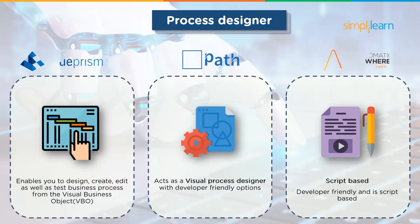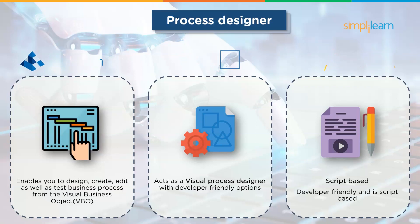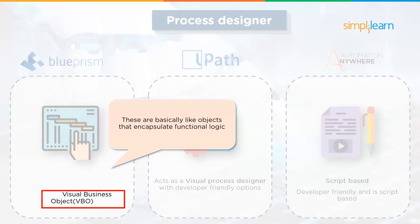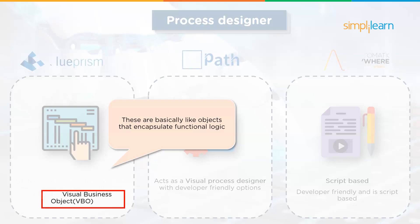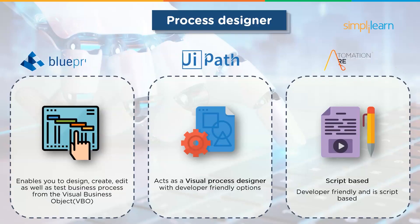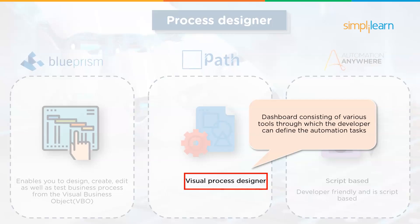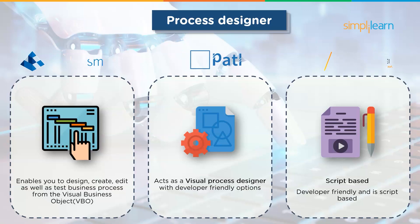Next up we have Process Designer. Blue Prism allows you to design, create, edit as well as test business processes with the help of Visual Business Object. VBO is like an object that you see in C#, C++ or Java that encapsulates functional logic. A VBO can take the form of a set of coded functions which may be written in VB.net or C#.net. UiPath acts as a Visual Process Designer with developer-friendly options — basically a dashboard consisting of various tools through which one can define the automation tasks. Lastly, Automation Anywhere is script-based and is developer friendly.